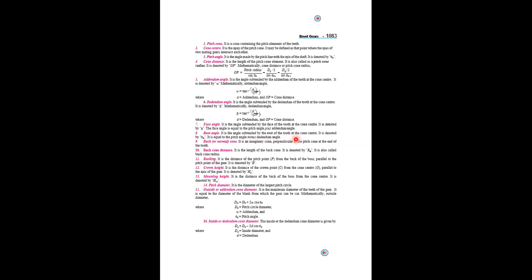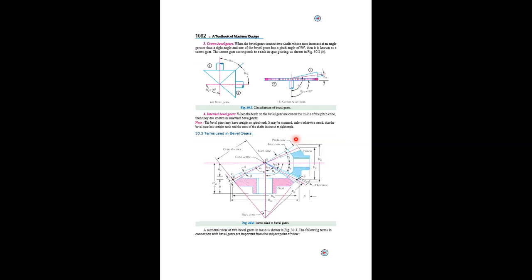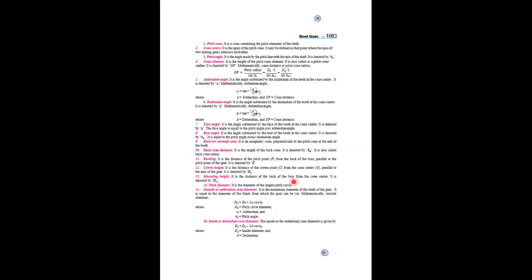The cone distance is measured as OP, where O is the apex and P is the outer point of the mating gear. Here one gear is vertical and the other is horizontal; the two teeth mate at point P. The distance from the center to P is called the cone distance or pitch cone radius.